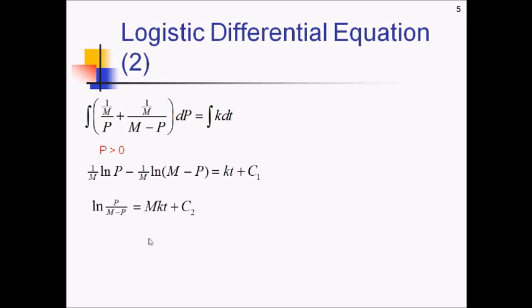Let's keep going. Next, I have to raise e to both sides. So that's just going to cancel out the ln on the left side. So I have P over M minus P. And on the right side, I have e to the Mkt plus C2. But now I can split up that e into e to all this stuff plus e to the C2. But rather than writing e to the C2, I'm just going to make that e to the C2 a C3. It's just some other constant. You can see where this is going. We just keep changing this constant to some other constant.